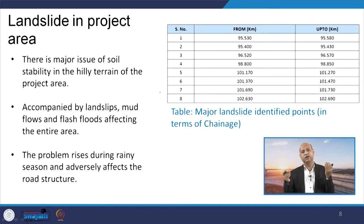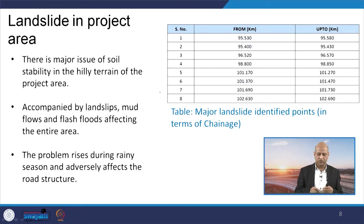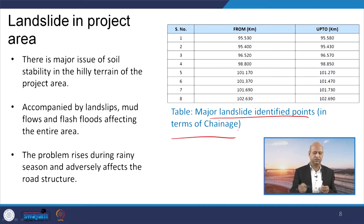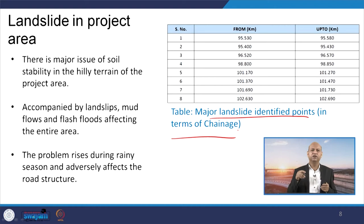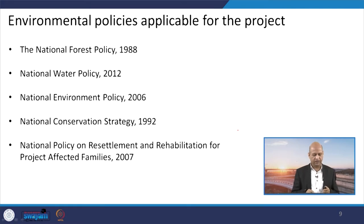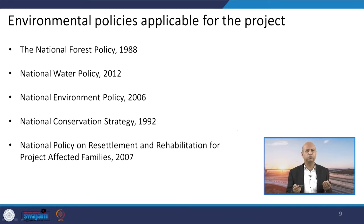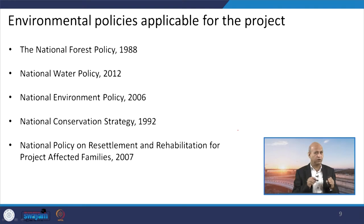Because this is a hilly area with steep slopes, landslide possibilities exist at certain locations. Those points were noted — major landslide identified points in terms of distances from particular locations — and observations of flash floods and mud flows were properly listed so that treatment must be done at those specific locations to avoid such incidents.